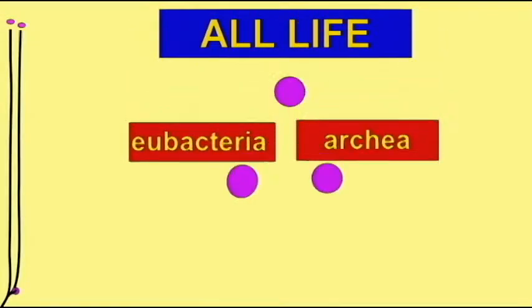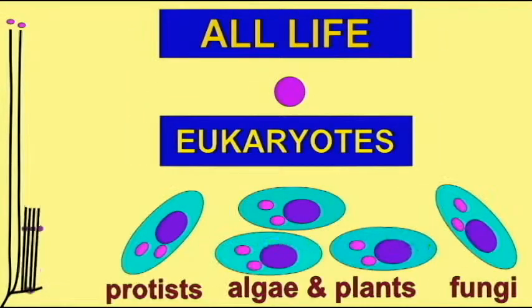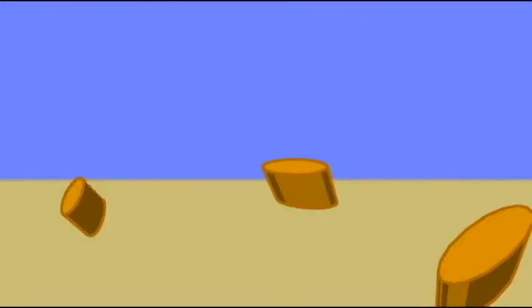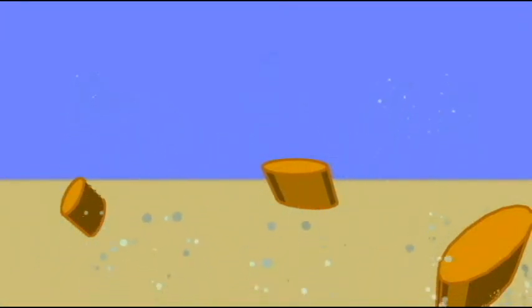Later, eukaryotic cells appeared. Sponges are the simplest animals alive today, and they are also the first animals to appear in the fossil record, being known before the Ediacaran period at the end of the Precambrian era.